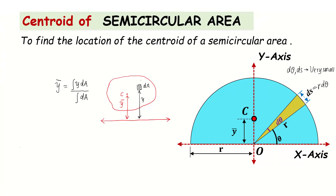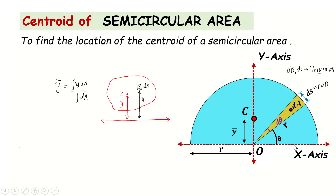This area dA is concentrated at a particular point — the centroid of this sector. The entire area dA of this sector is concentrated at this point. We need to find the distance of this area dA from the x-axis, which is y — the distance from the axis to the location of the point at which the area dA is concentrated.